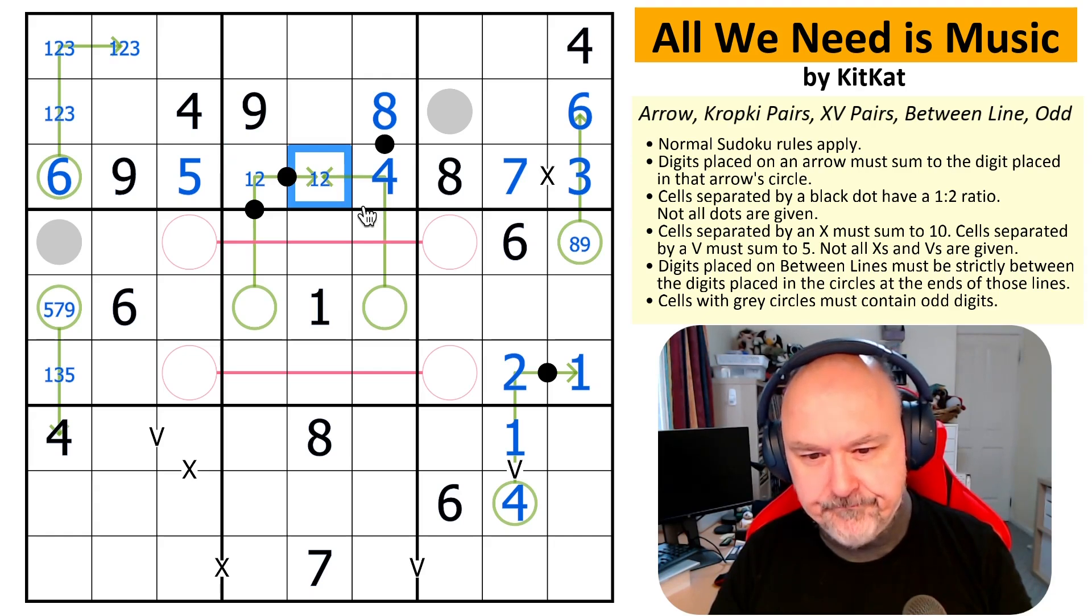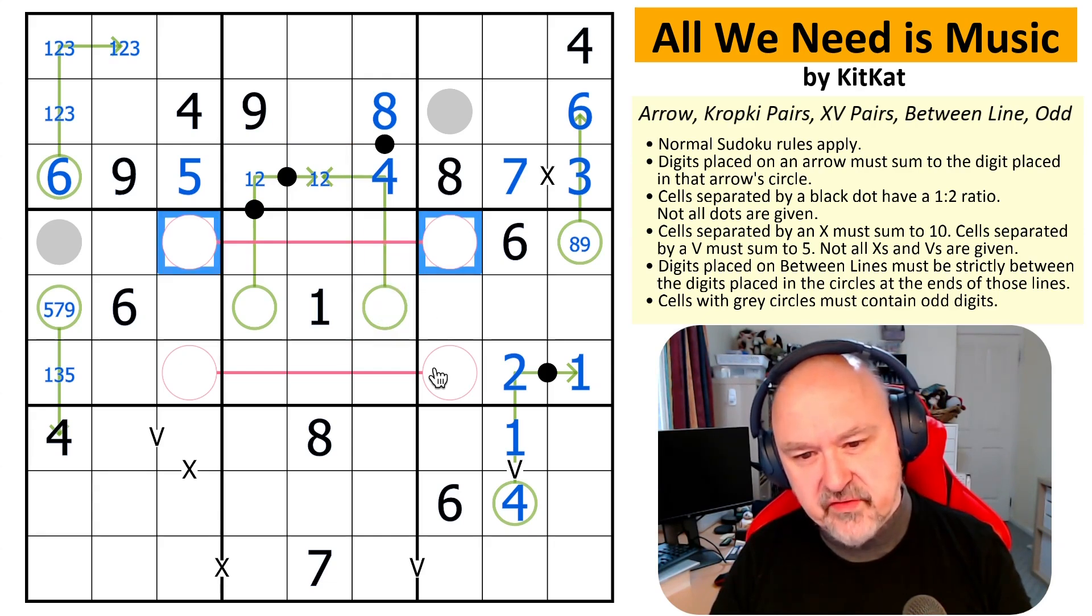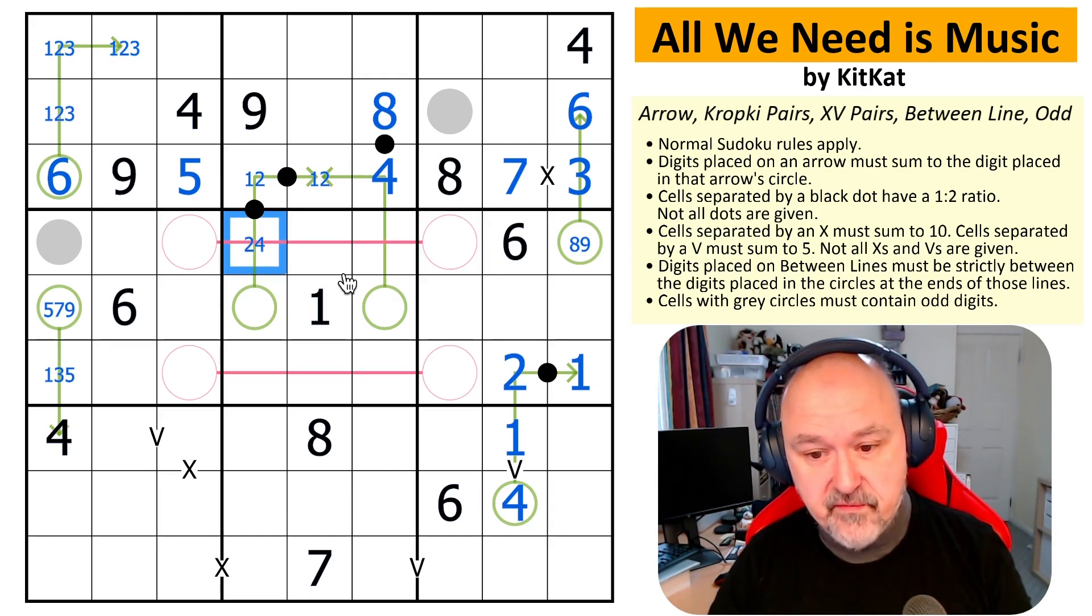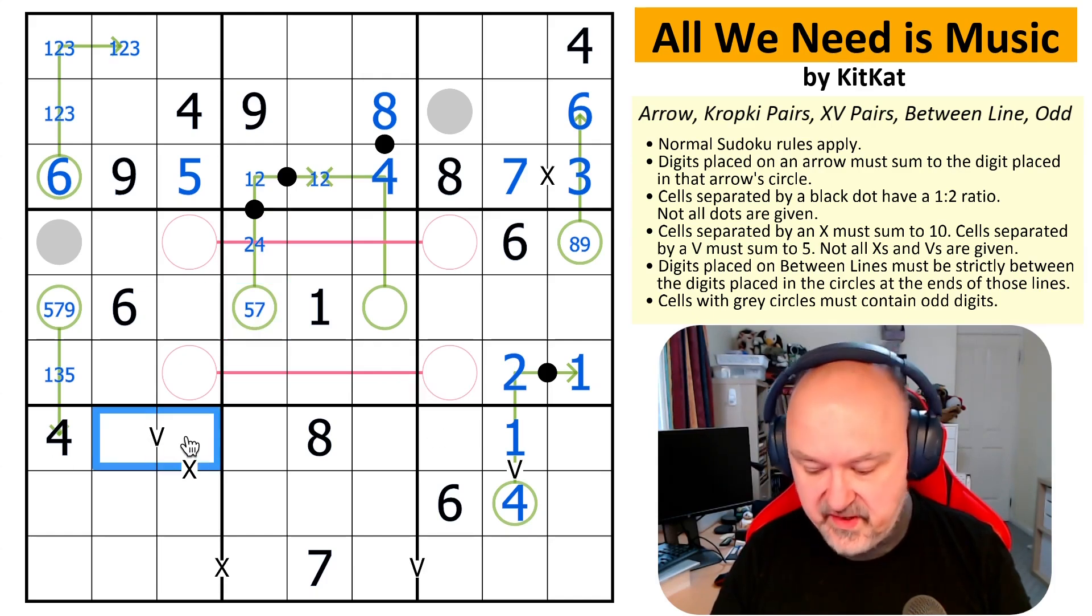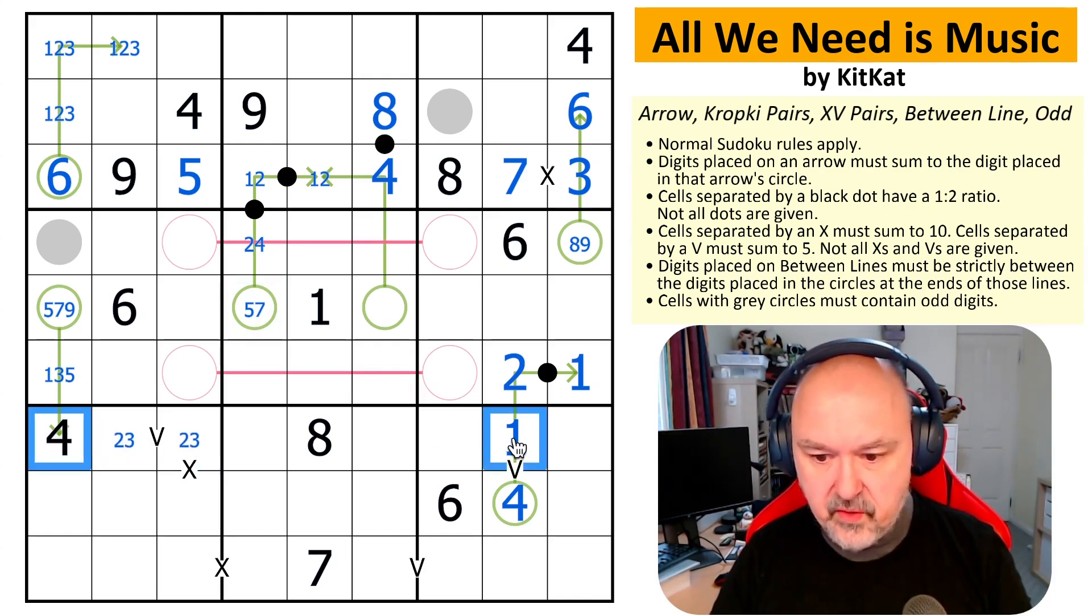Hmm. This can't... Ooh, interesting. If this is 1, this is 2. If this is 2, this can't be 1, but it could be 4. So if this is 3 plus 2, then this is 5. And if it's 3 plus 4, it's 7. So this is 5 or 7.